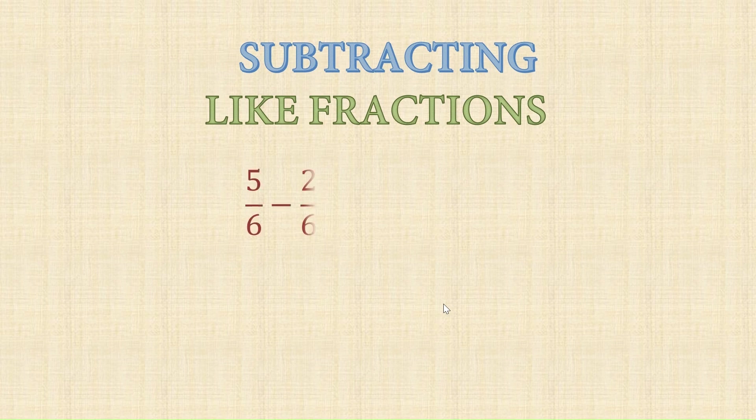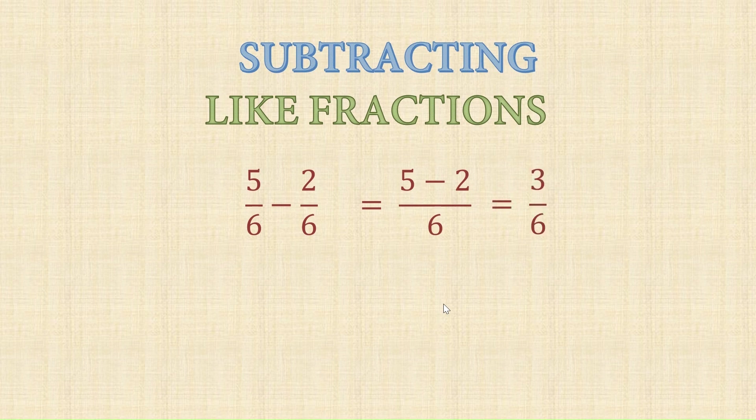Similarly, to subtract like fractions: 5 upon 6 minus 2 upon 6 — directly subtract the numerators. That is 5 minus 2 upon 6, which gives 3 upon 6. We can further simplify this to 1 upon 2.